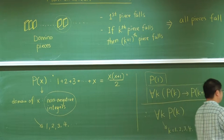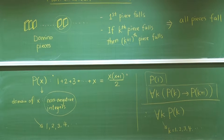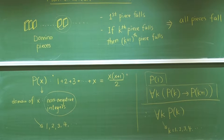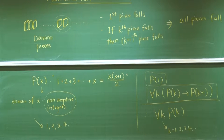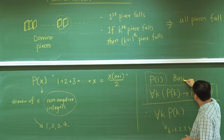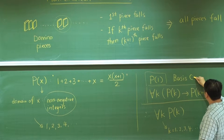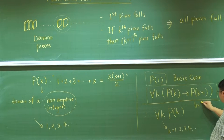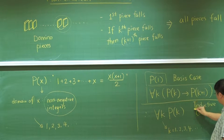Let's take a look at how we can use mathematical induction to prove that the summation formula is correct for every x equal to 1, 2, 3 up to infinity. What is P(1)? P(1) is the statement: 1 is equal to 1 times (1+1) over 2. The right-hand side is 1 times 2 over 2, which is 1. So this one is true. We have proven the basis case.